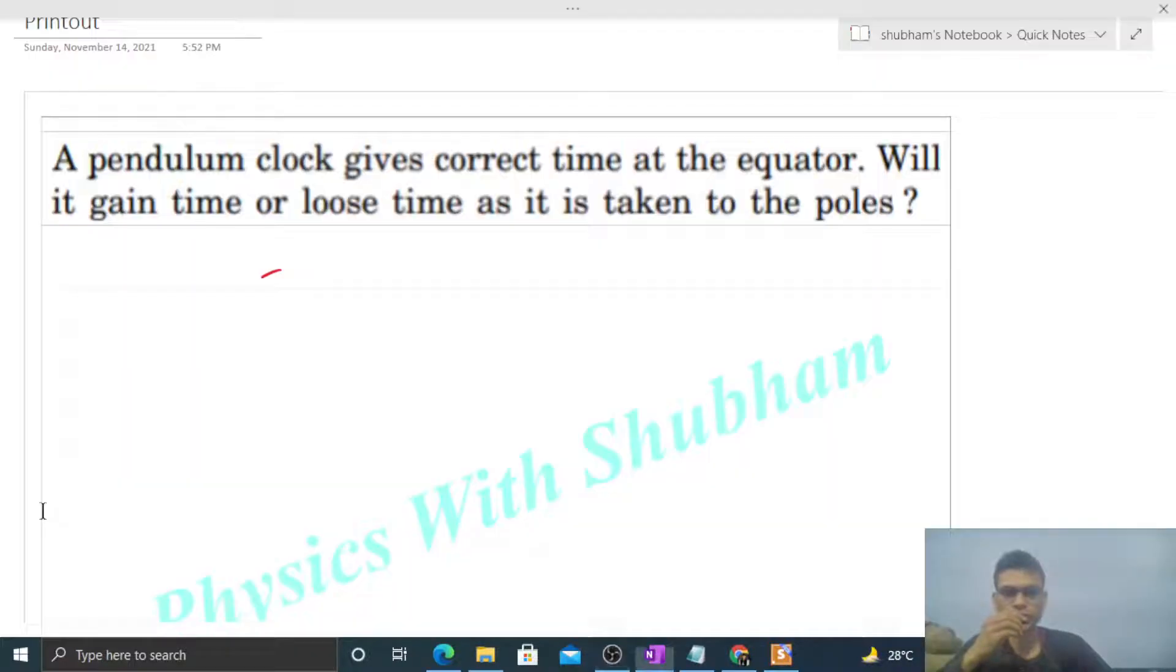Okay hi everyone, so today let's discuss this interesting problem: A pendulum clock gives correct time at the equator. Will it gain time or lose time as it is taken to the poles?